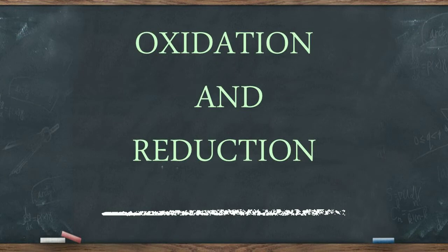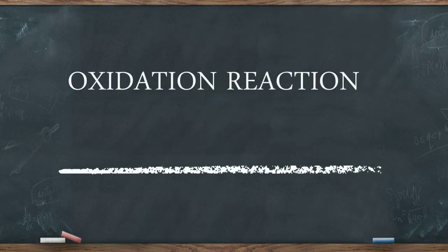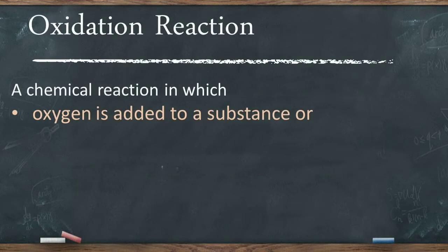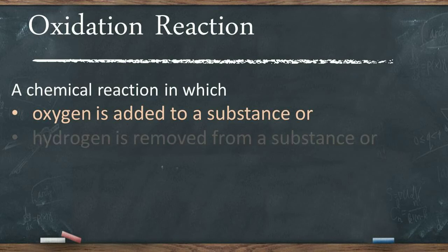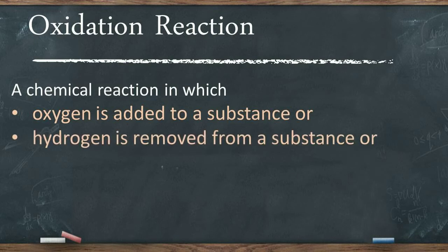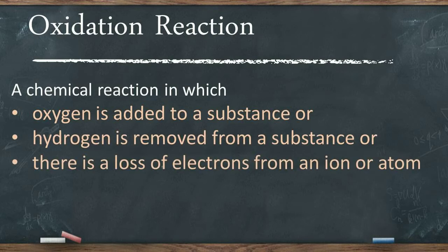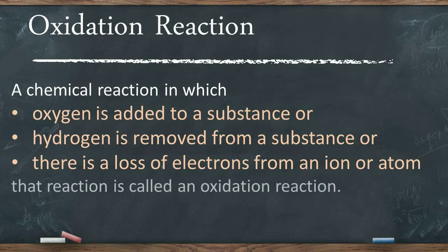Let us firstly study about oxidation reaction. A chemical reaction in which oxygen is added to a substance, or hydrogen is removed from a substance, or there is a loss of electrons from an ion or an atom, is called an oxidation reaction.